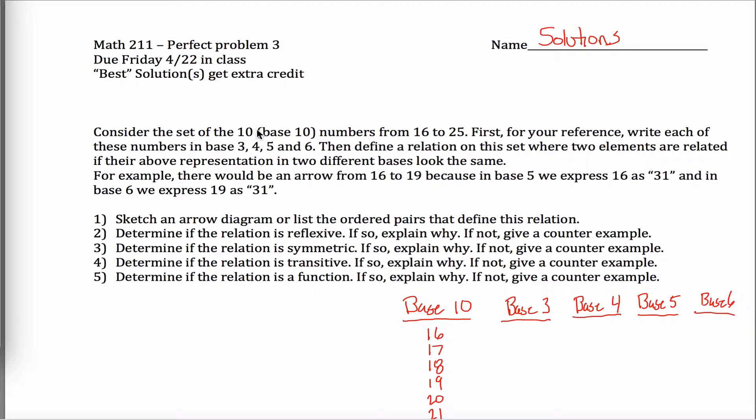So what's going on is we're defining a relation. All your questions have to do with relations, but the way the relation is defined has to do with writing numbers in different bases. So consider the set of the 10 base 10 numbers from 16 to 25. And what I'm going to eventually do is I'm going to define a relation on this set where two elements are related if the way you write them is the same in two different bases. There will be an arrow from 16 to 19, for example, because in base five, 16 is written as three one. And in base six, 19 is written as three one. So it's three one in either case. 16 and 19 look the same in two different bases.